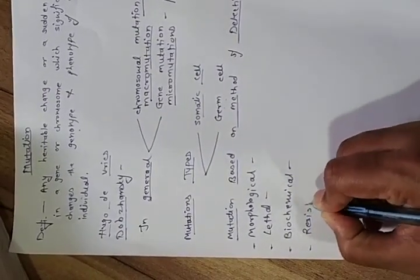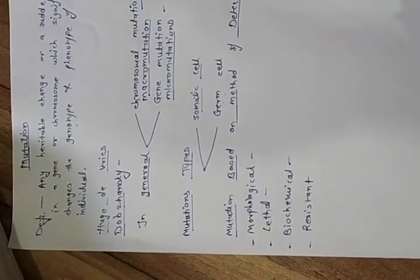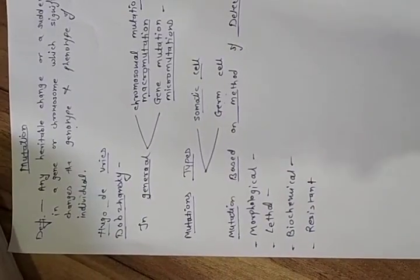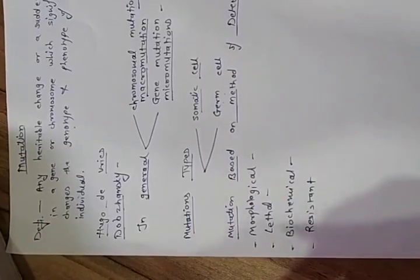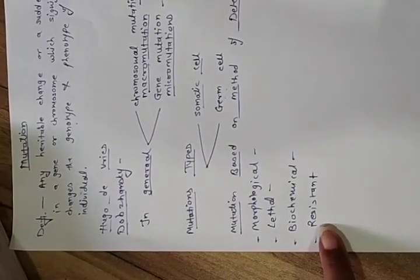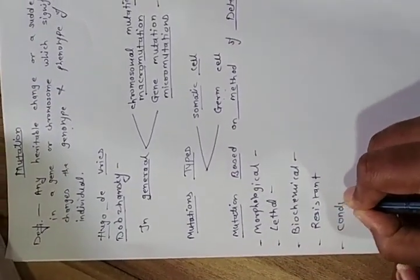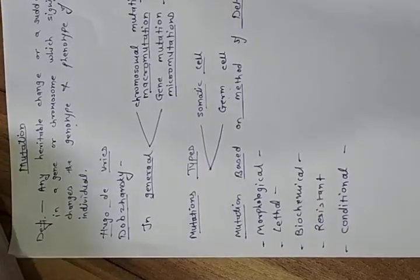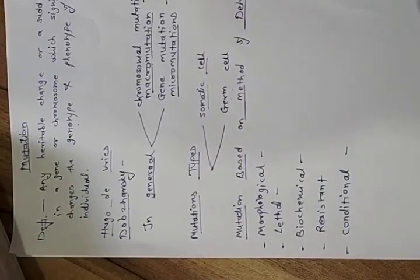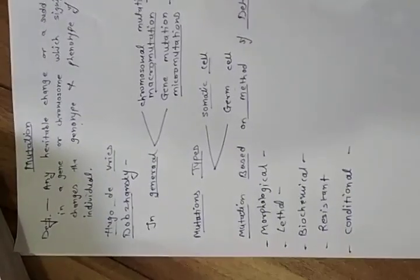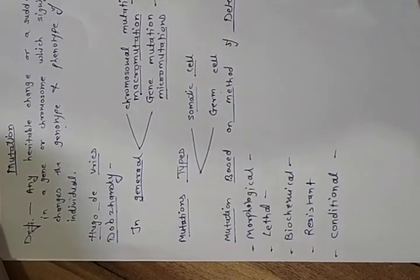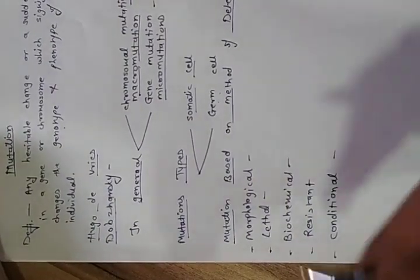Resistant mutations are identified by the ability of an organism to grow in the presence of antibiotics like streptomycin, ampicillin, or cycloheximide. Some bacteria have antibiotic-resistant strains due to gene alterations. Conditional mutations allow the mutant phenotype to be expressed only under certain conditions called restrictive conditions, while normal conditions are called permissive conditions. If the restrictive condition arises, the mutation becomes visible.